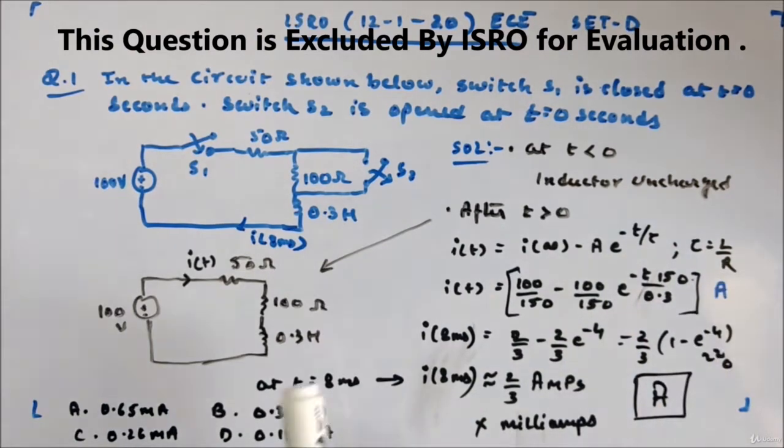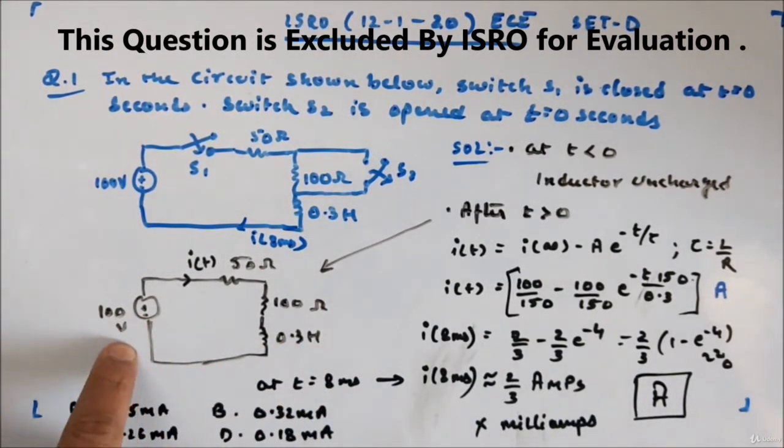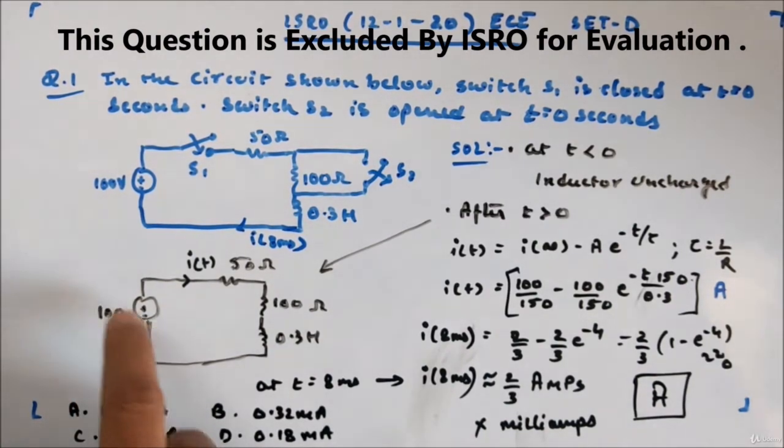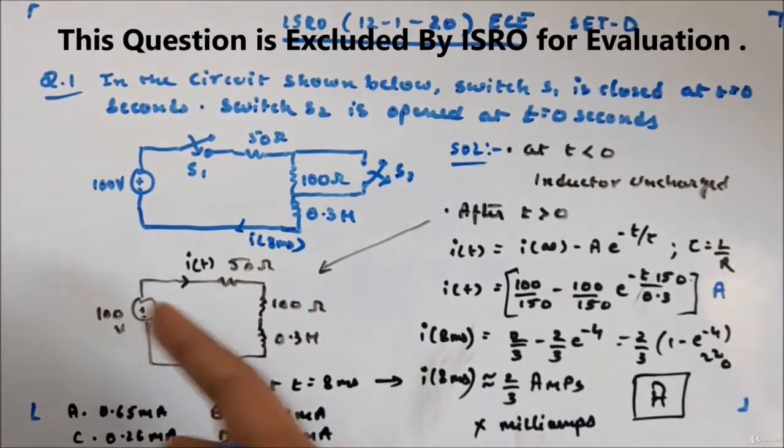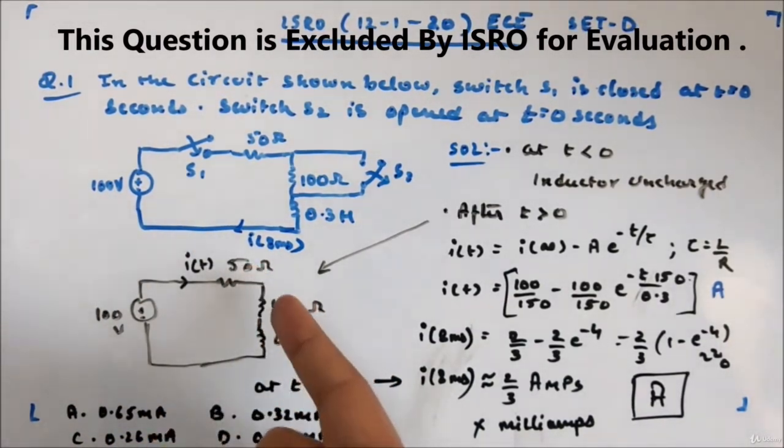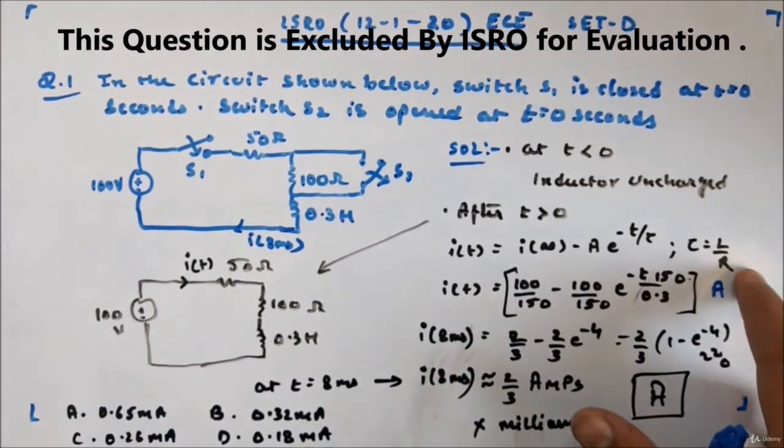L is 0.3. R, if you look from the L side by shorting this source, by replacing this source with internal resistance, since internal resistance is not there, it will be short. You will see these two resistances in series, so R equivalent will be 150 ohm.